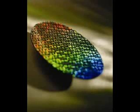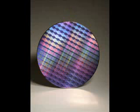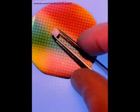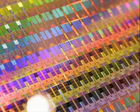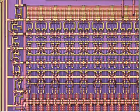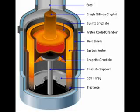A silicon wafer is a thin piece of semiconductor material used in the fabrication process of integrated circuits. There are two different methods used to grow an ingot of single crystal silicon, known as the Czochralski and Float Zone methods. The following is a summary of the steps in the Czochralski process of silicon wafer manufacturing.